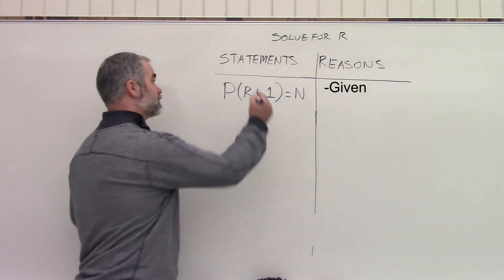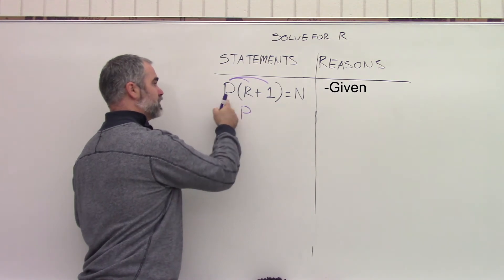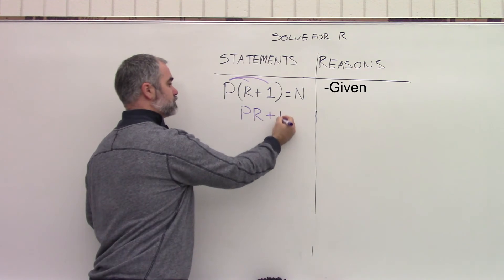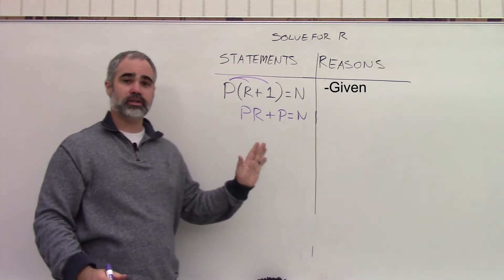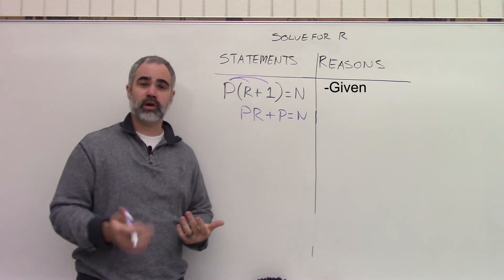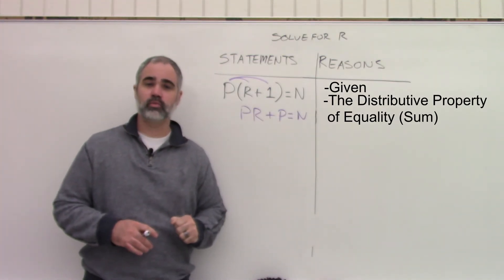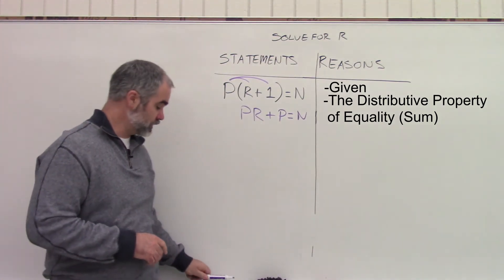So now if I want to go about solving for R, probably the first step I would do on this is I would distribute the P into both. So P times R, we'll just write PR. P times 1 is P. And that still equals N. And my justification here is going to be the distributive property of equality. You can put the word sum in there if you want to, if your teacher asks you, because there's a plus sign here.